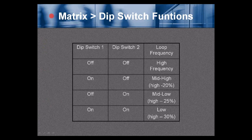DIP switch frequency settings: switches 1 and 2 both off = high frequency. Switch 1 on, switch 2 off = mid to high frequency. Switch 1 off, switch 2 on = mid to low frequency. Switch 1 on, switch 2 on = low frequency.